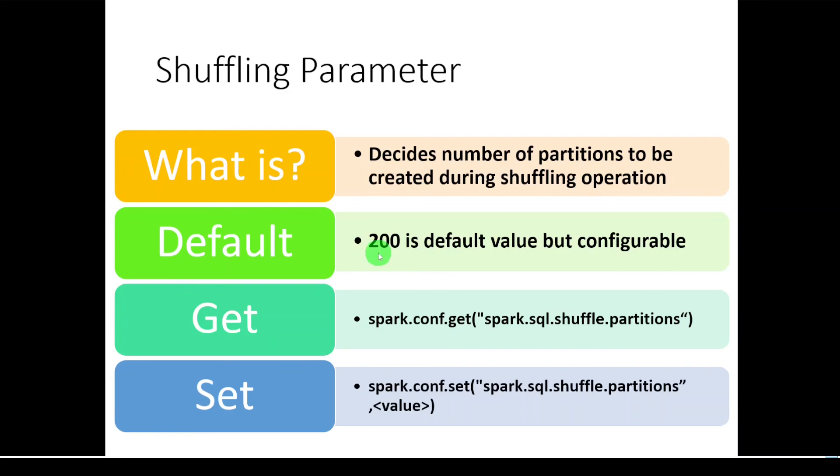And if you want to understand what is the default value or what is the set value from our environment, then we can use this command spark configuration get, then we have to supply spark.sql.shuffle.partitions. This will give the number of partitions shuffle parameters set for our environment.